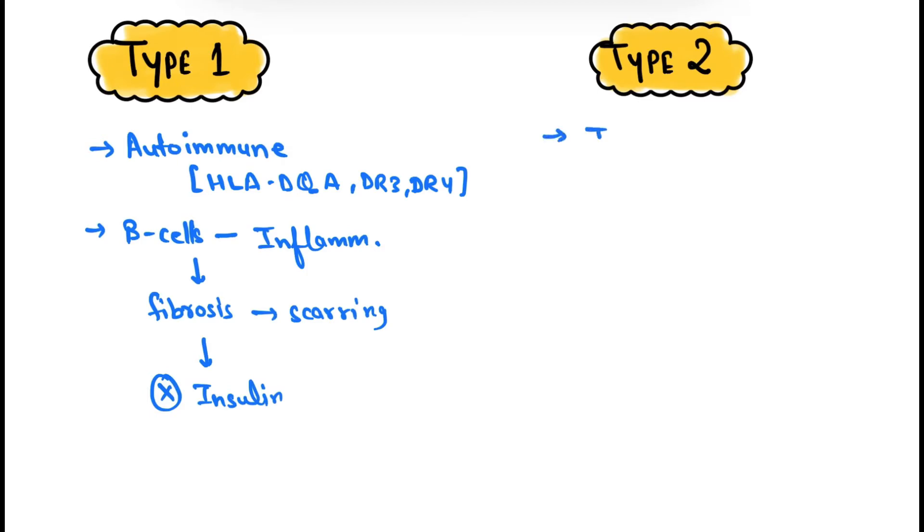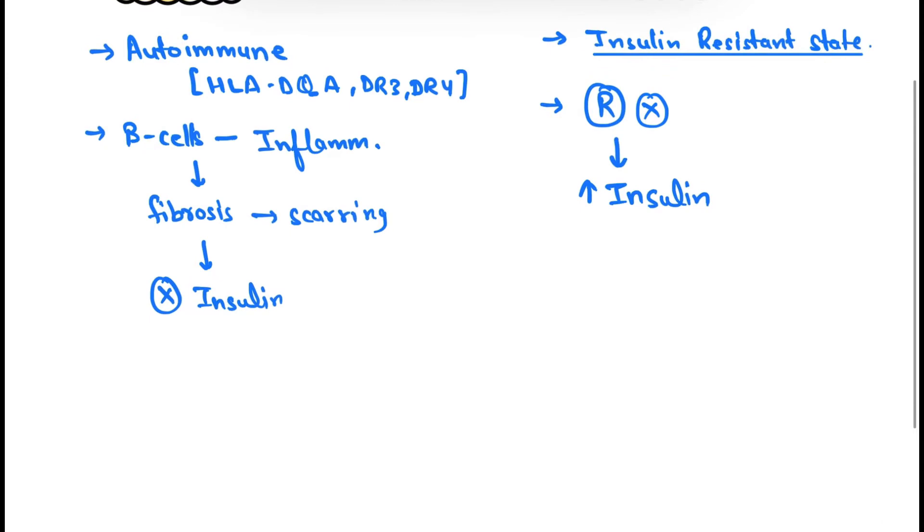Now coming to type 2, it is an insulin resistant state. That means the receptors for insulin are not working properly. Therefore, there is increased insulin in the body. This is also known as insulin resistant state. Because of this, type 1 has no insulin production and is known as insulin dependent state.